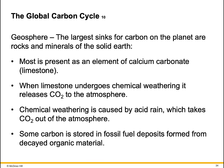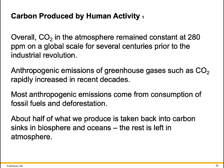The geosphere: the largest sinks for carbon on the planet are rocks and minerals of the solid Earth. Most is present as calcium carbonate, or limestone. When limestone undergoes chemical weathering, it releases CO2 to the atmosphere. Chemical weathering is caused by acid rain, which takes CO2 out of the atmosphere. Some carbon is stored in fossil fuel deposits formed from decayed organic material. Overall, CO2 in the atmosphere remained constant at 280 ppm on a global scale for several centuries prior to the Industrial Revolution.